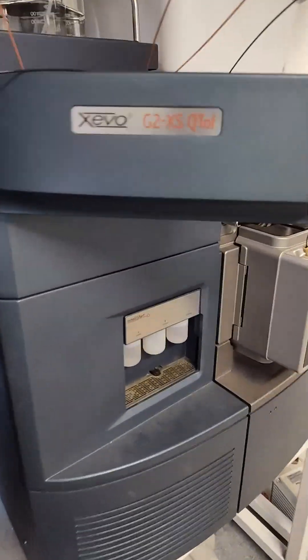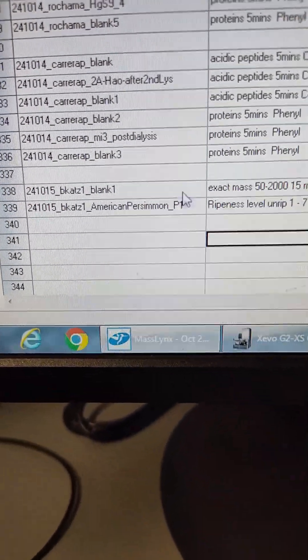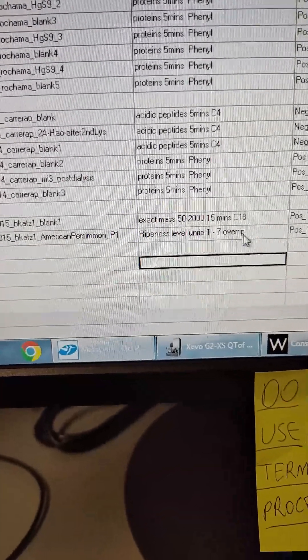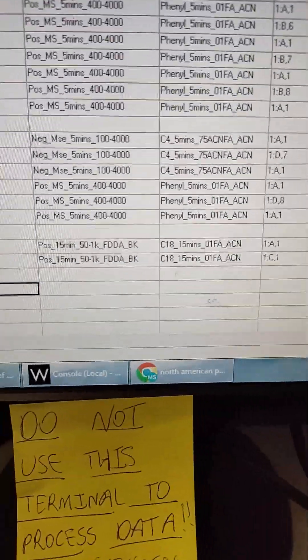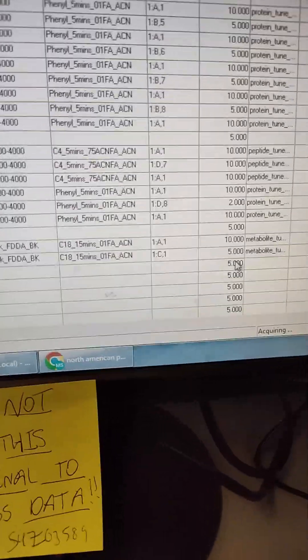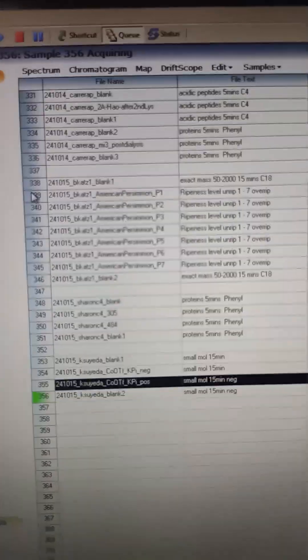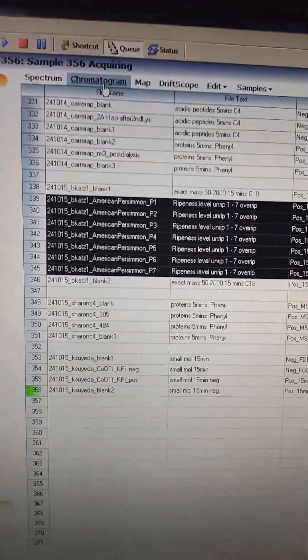Zero cutoff. And then we're going to be running this American Persimmon ripeness level 1 to 7 on that C18 method with fast EDA and positive, looking for O-linked flavones. All the American Persimmons in order. And here is the data.